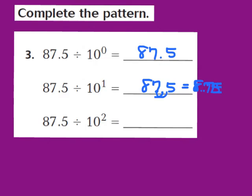Now let's take a look at the third part. We have 87 and 5 tenths being divided by the second power of 10. My exponent is now a 2, so I'm going to move the decimal point two places to the left. I write down my 87 and 5 tenths — once, twice — and my decimal now ends up in front of the 8. So my answer turns out to be 875 thousandths. Because once again, as you divide by increasing powers of 10, the decimal point moves one place to the left for each increasing power of 10.